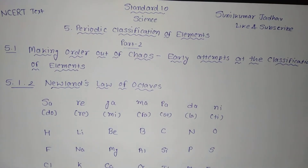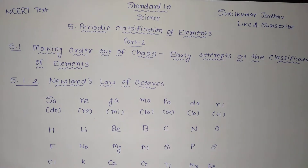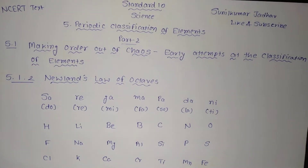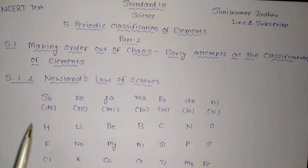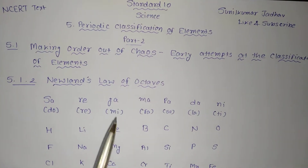Now, 5.1 Making Order Out of Chaos — Early Attempts at the Classification of Elements. This is section 5.1.2: Newland's Law of Octaves.